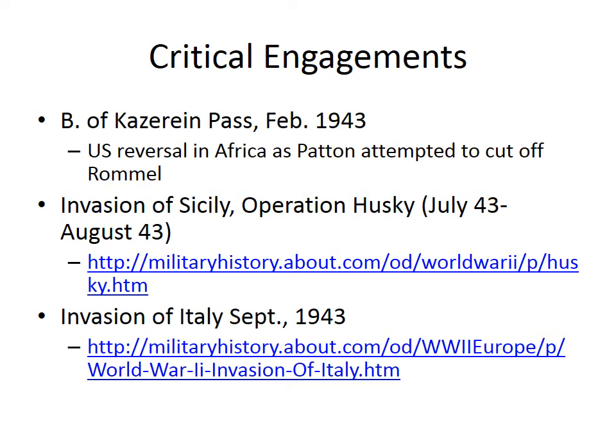The first engagement by the United States in the European theater didn't take place in Europe — it took place in Africa. Just before Patton arrived on the scene, the Battle of the Kasserine Pass demonstrated that the Americans, just as in WWI, were ill-prepared to fight a modern war. The United States was crushed in the Battle of the Kasserine Pass and cut to ribbons, which actually allowed Rommel and much of the Afrika Korps to escape Africa.